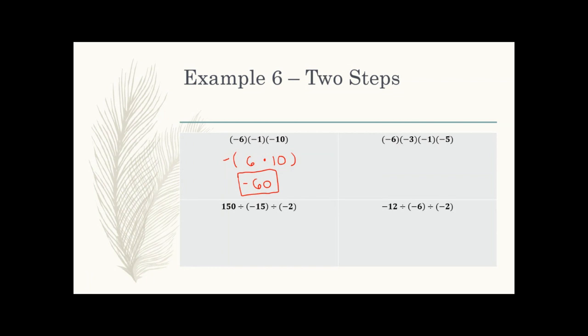Top right: four things multiplied together with four negative signs. Four is even, so the answer is going to be positive. Splitting into pairs: the first two numbers — negative times negative — give a positive, and six times three is 18. The last two — negative times negative — give a positive, and one times five is five. Now 18 times five — that's a positive number. Using my calculator, that gives me 90.